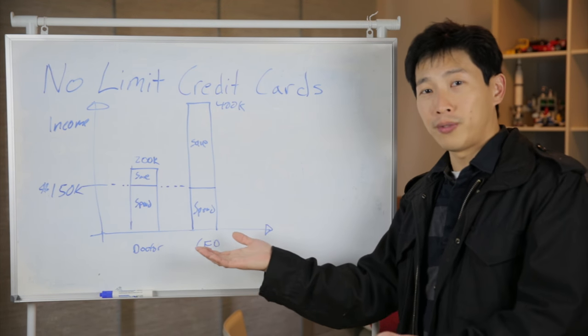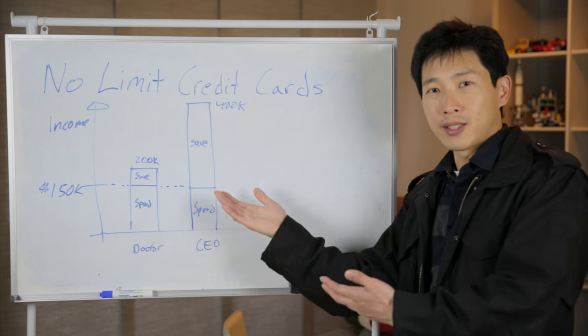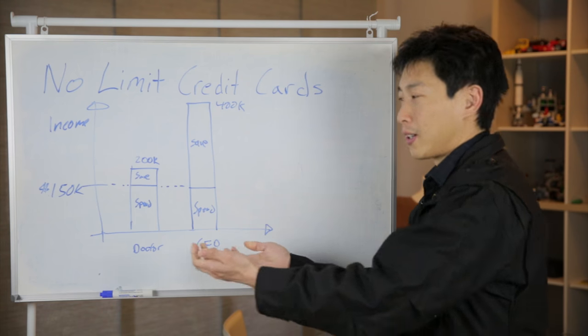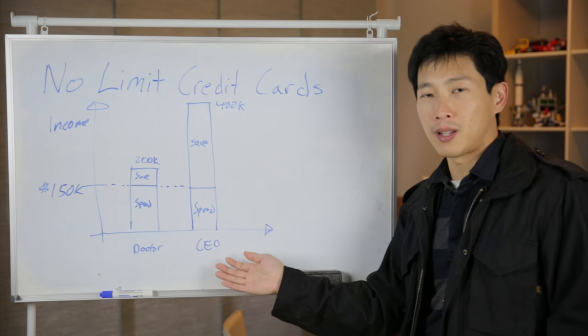In that case, this CEO also qualifies for a black card. He gets the same prestige. The prestige level when they pull out this credit card is the same. And yet the CEO is a lot better off.